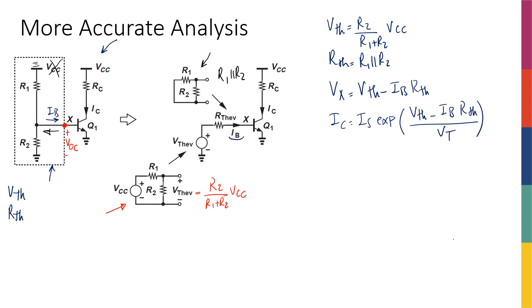Now, knowing that IB is also equal to Ic divided by beta, I pretty much have everything. So V-Thevenin is known, beta is known, R-Thevenin is known, Vt is known, and Is is known. So I can actually find the only unknown here is Ic.